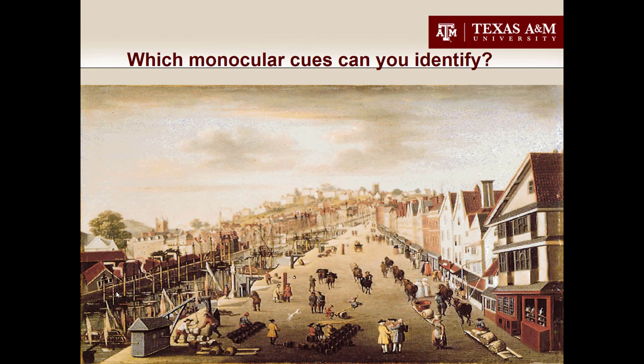Look at this painting and see if you can identify some of the monocular pictorial depth cues we just discussed. Note that artists for thousands of years, before we even knew there were monocular cues, have been using these tricks of perception to help their paintings look like they have real depth — a 2D canvas producing a 3D image.